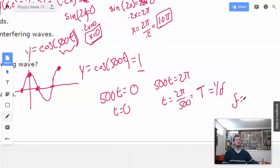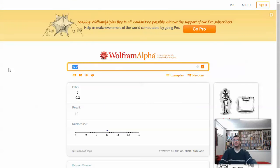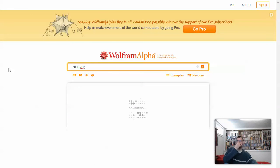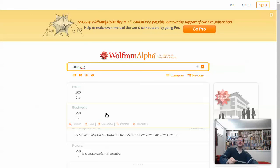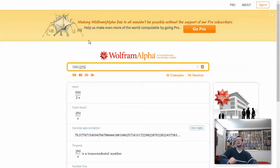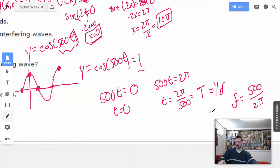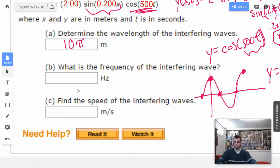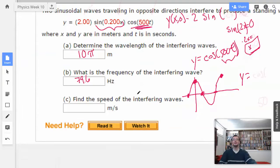Therefore, the frequency will be 500 divided by 2 pi, just the inverse. 500 divided by 2 pi, and we get 79.6. And that's going to be measured in hertz, which is 1 over seconds. So 79.6 hertz.